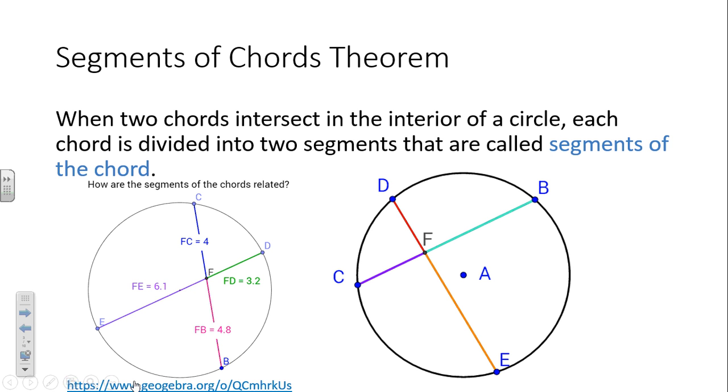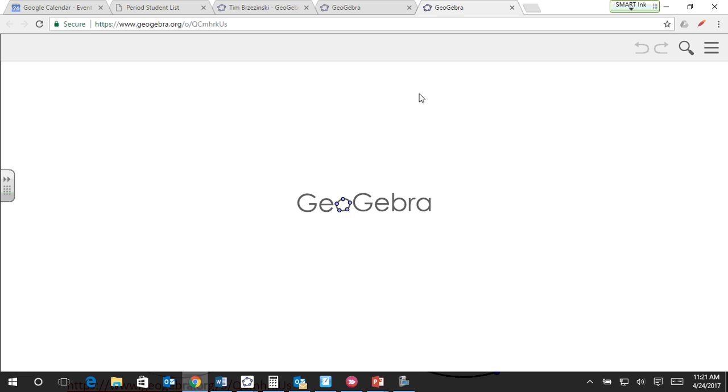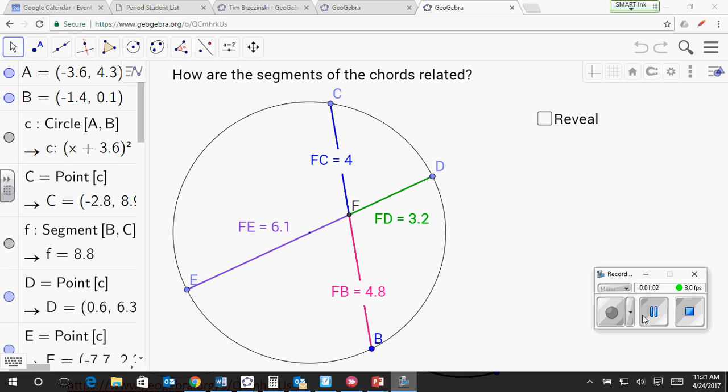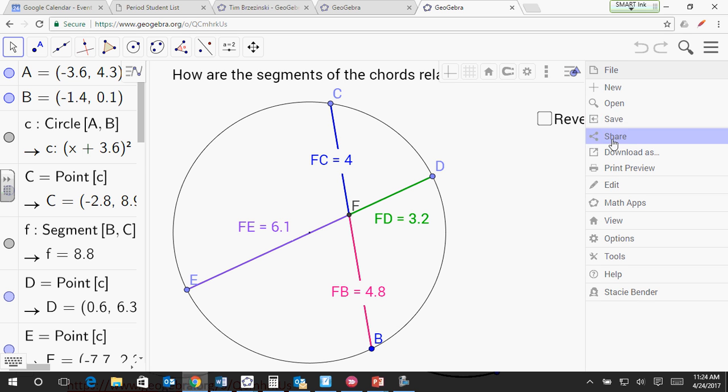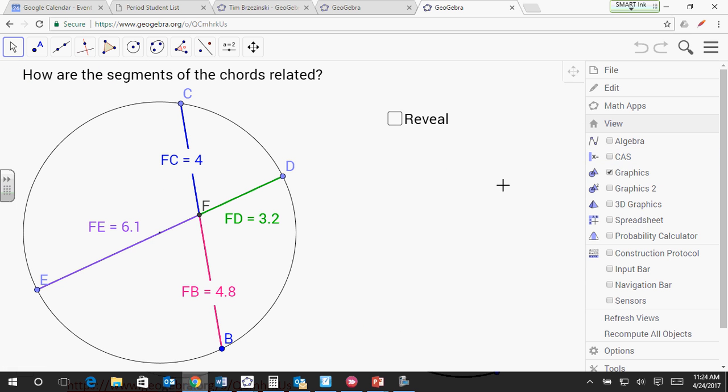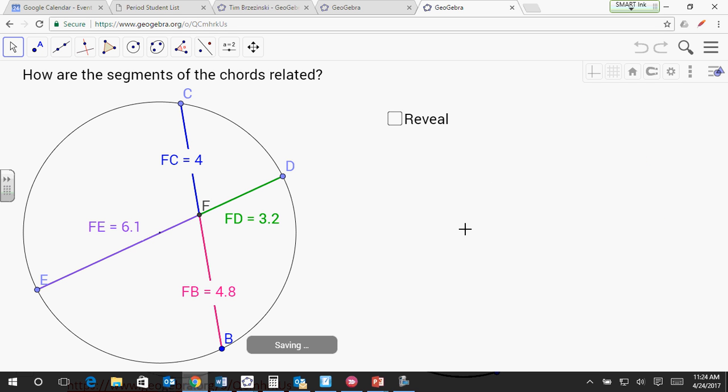So we'll pull this up, and you may want to have a calculator out. All right, so how are the segments of chords related? The first thing we're going to do is we're going to talk about how two chords can intersect inside of a circle.